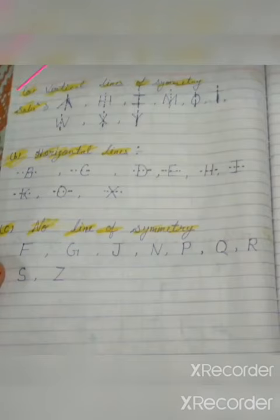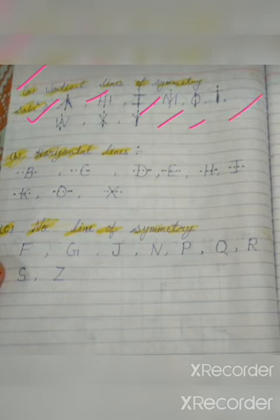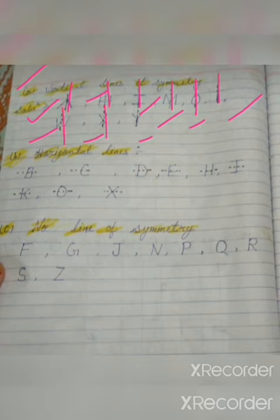Now Question 6 — alphabets with a vertical line of symmetry. You have to write the alphabets for which, when we draw a line of symmetry, it is vertical. The alphabets are: A, H, I, M, O, T, W, X, Y. The line of symmetry is vertical — vertical means straight up and down.